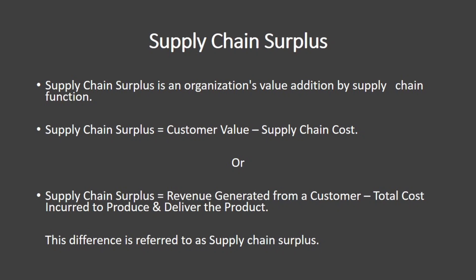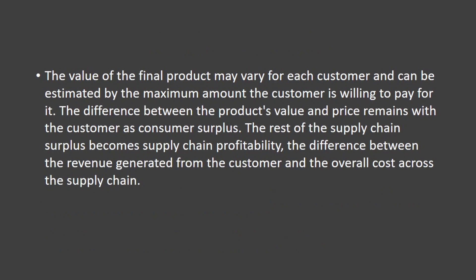This difference is referred to as supply chain surplus. The value of the final product may vary for each customer and can be estimated by the maximum amount the customer is willing to pay for it.